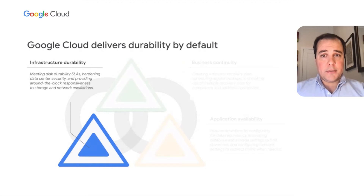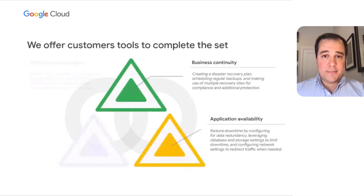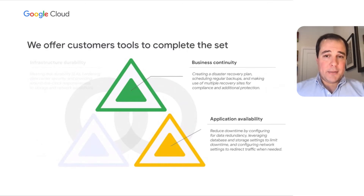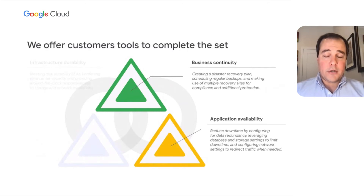One takeaway is that Google Cloud delivers infrastructure durability to all our infrastructure-as-a-service customers. This is a default setting for us, not an extra charge or an option. If you want to build a resilient, highly available application, we want to take care of the first step. The next two steps — ensuring application availability and creating a business continuity plan — are equally important. For them, we offer our customers tools and services that they can adopt to meet specific goals. We recognize that some Tier 1 customer-facing transaction applications will have requirements above and beyond an internal sandbox application with a few users and no customer data.